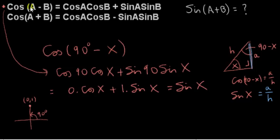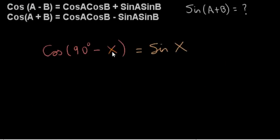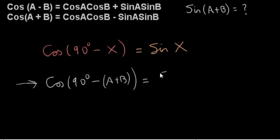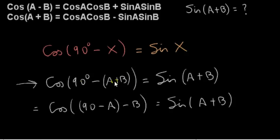This result is true in general for any angle X using the first identity. Now we replace X with A plus B — that's how we bring in sine of A plus B, since X can be any angle. Copying this out with X replaced by A plus B, we can take the minus sign in and regroup. By the associative law, we can bracket off the 90 minus A, giving us cosine of (90 minus A) minus B.